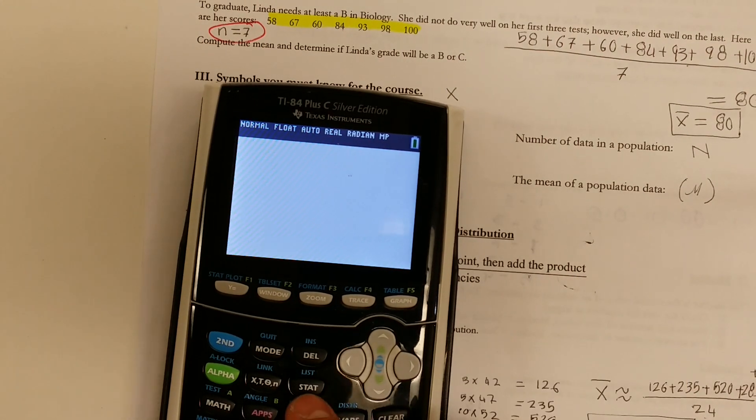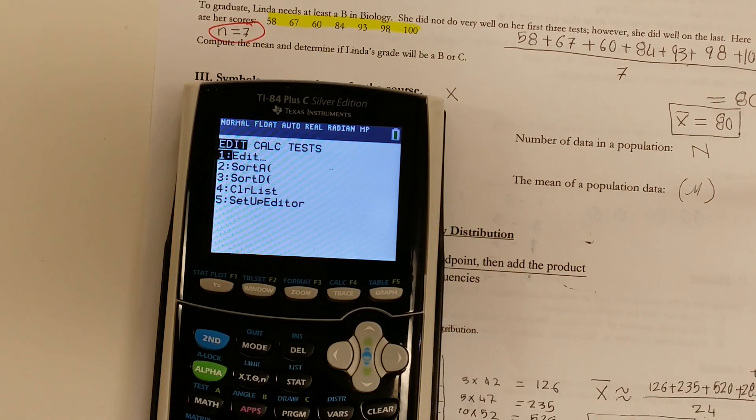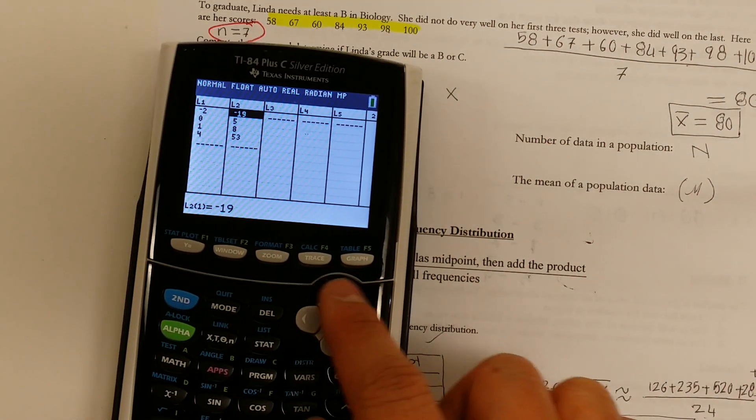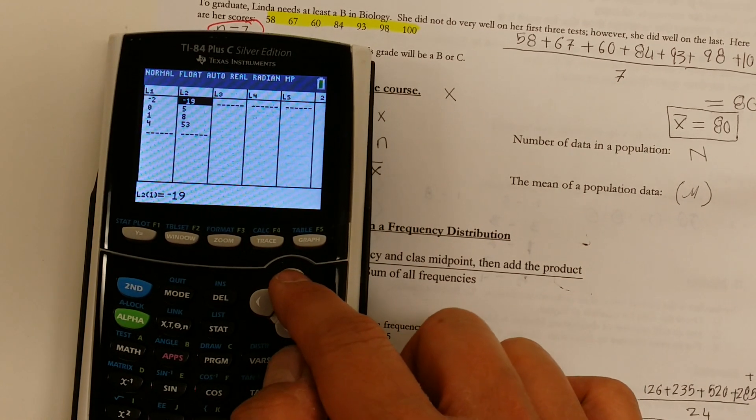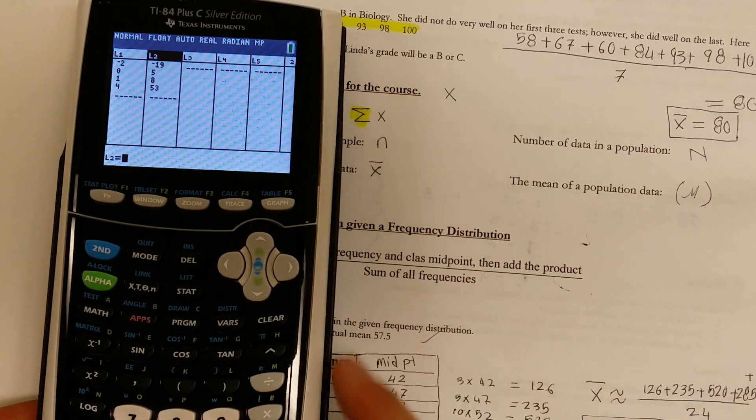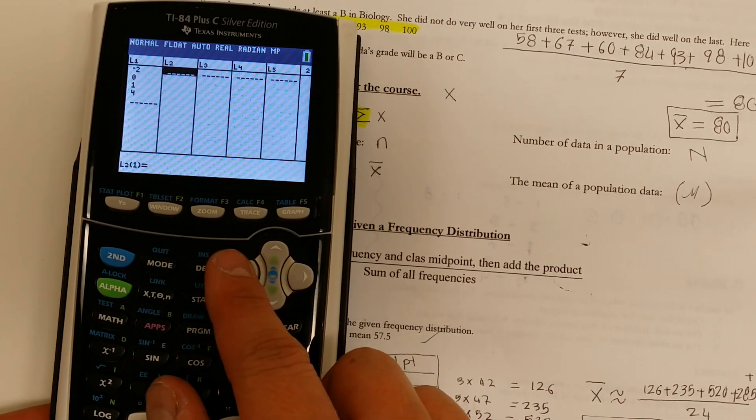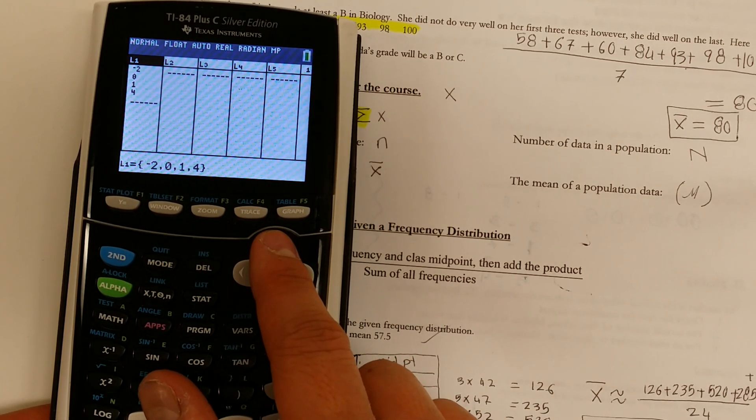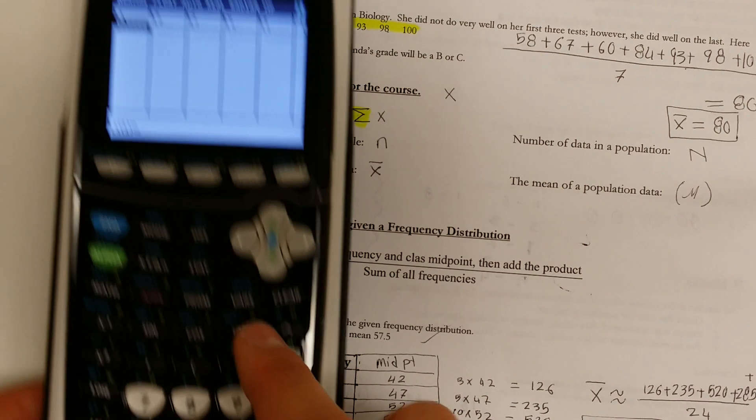And then to choose edit, you hit option 1. So hit the number 1 down here. And then if you see anything in here, go ahead and erase them. To erase them, you use this up arrow to go up, hit clear, and then you have to hit enter. So hit enter, and that clears it. I also want to clear this second, this first column. So I make sure it goes up there. Hit clear, and then hit enter. And it clears the data.